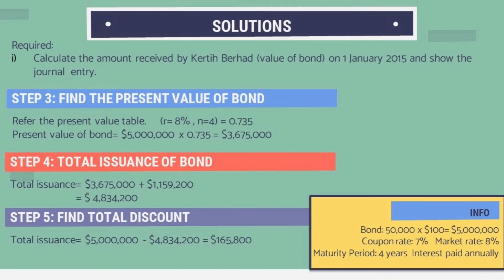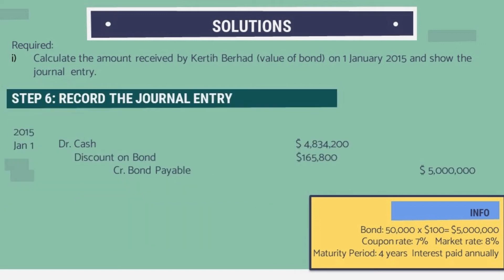We then calculate the total issuance of the bond, which is the present value of the bond plus the total interest of the bond. The total issuance is $4,834,200. To find the discount amount, we subtract the total issuance from the face value of the bond: $5,000,000 minus $4,834,200 equals $165,800. This is the discount on the bond.